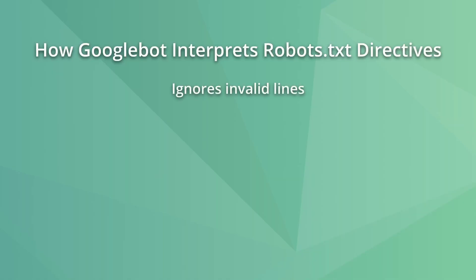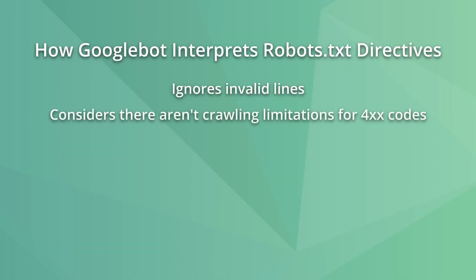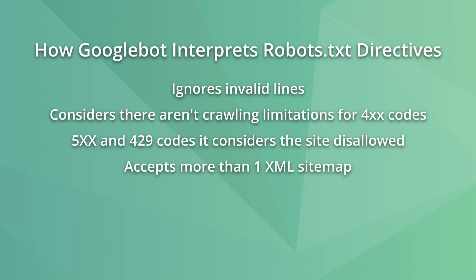Googlebot and Bingbot default to the most specific rules, which are usually less restrictive. Googlebot is probably the most important crawler on the web and sometimes acts differently from other bots. It will ignore invalid lines, comments, and directives without a path. When robots.txt returns 4xx codes other than 429, Google considers there are no crawling limitations. For 5xx and 429 codes, Google considers the site disallowed but will keep trying. If after 30 days the file is still inaccessible, Google considers there are no restrictions. Also, Google accepts more than one XML sitemap per robots.txt file, and in case of conflicting rules, it uses the less restrictive directive.